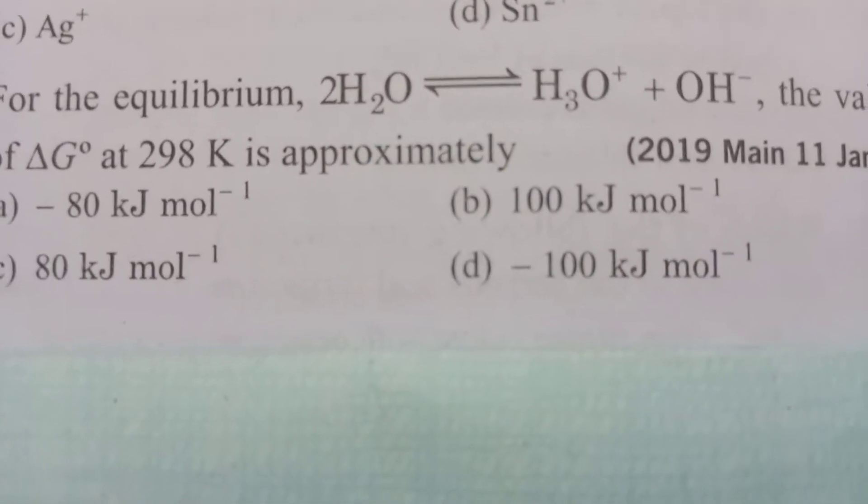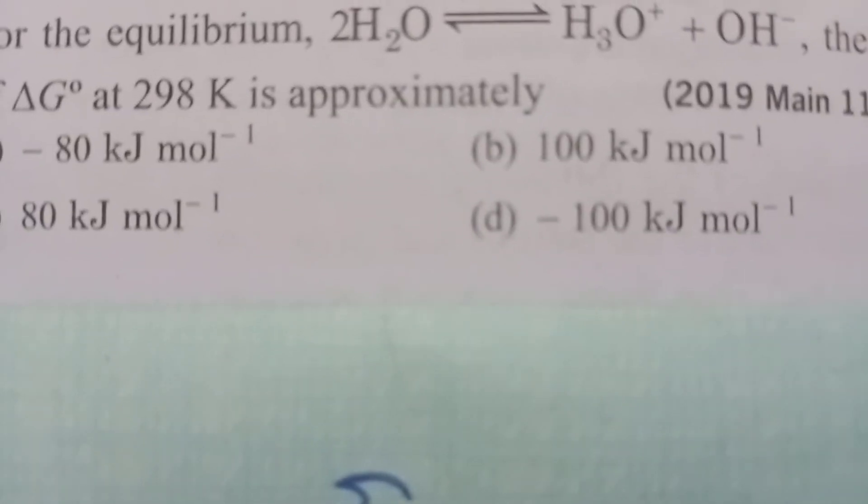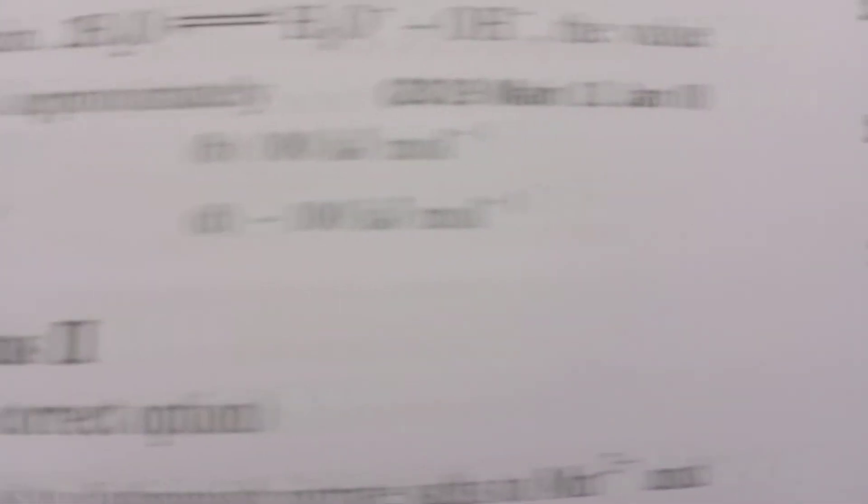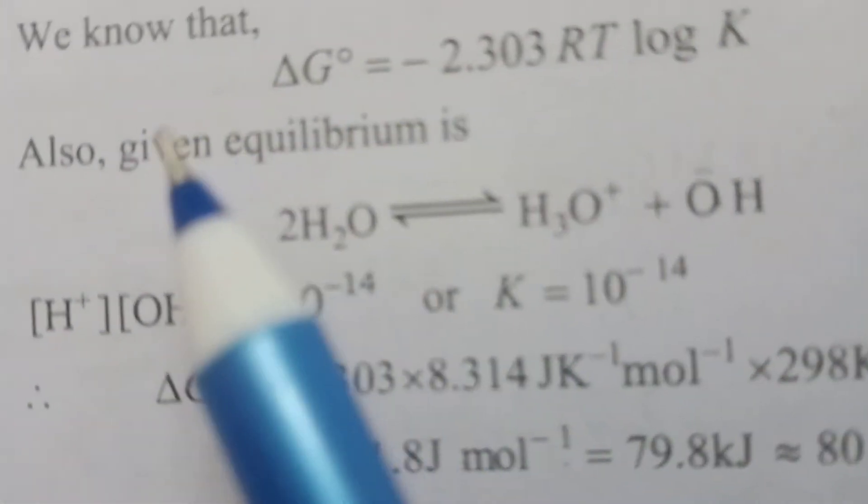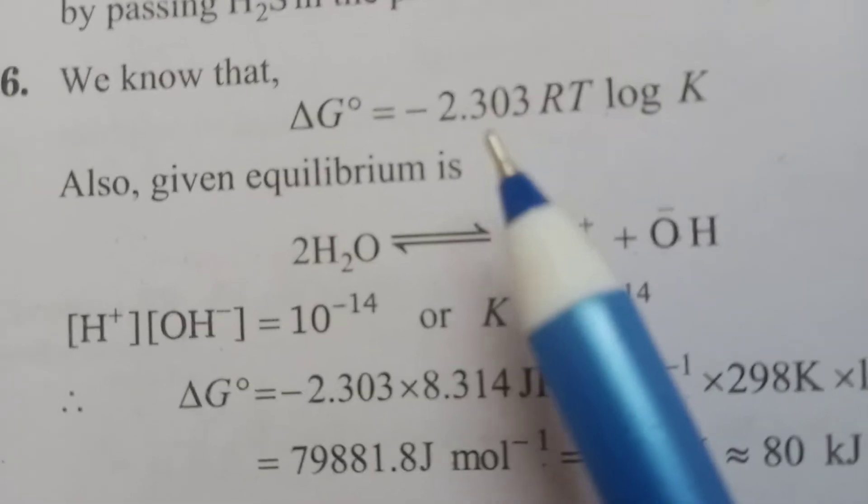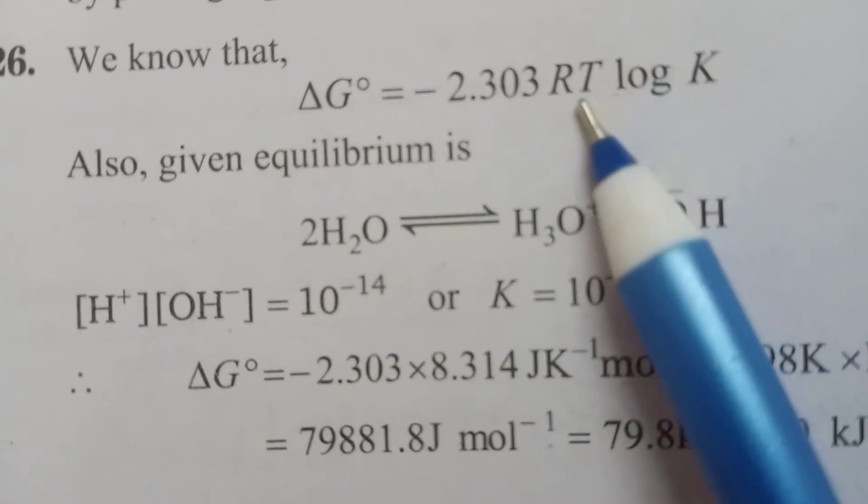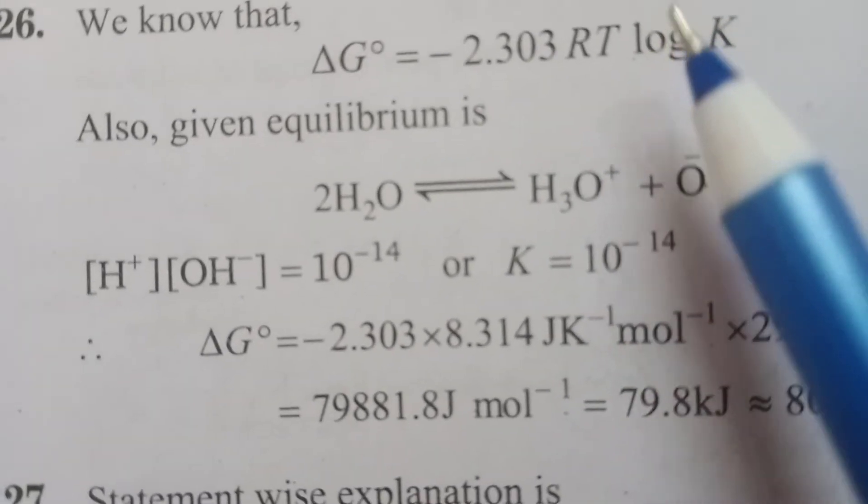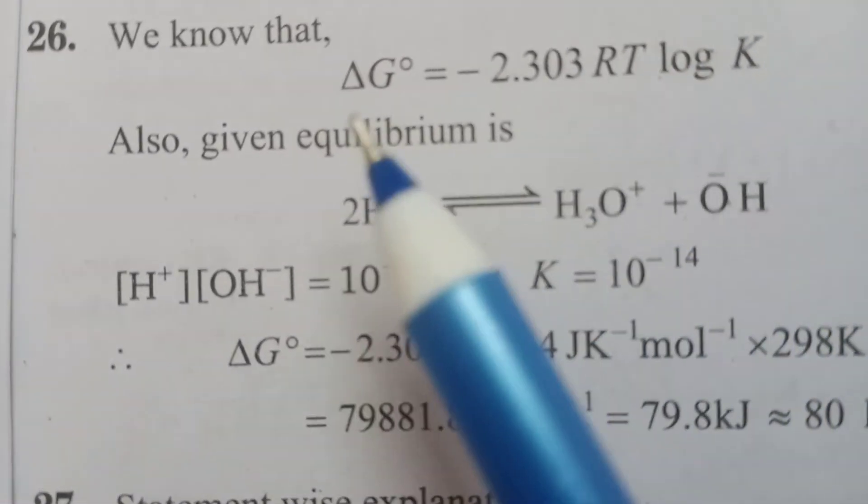So we have to calculate ΔG°. We know that ΔG° = -2.303RT log K. This is the formula. This type of question was asked in 2019.